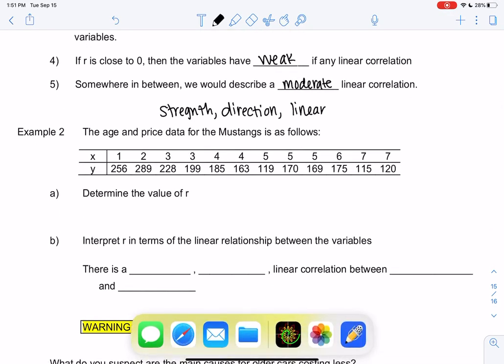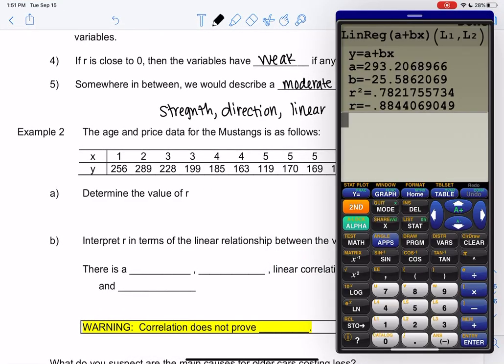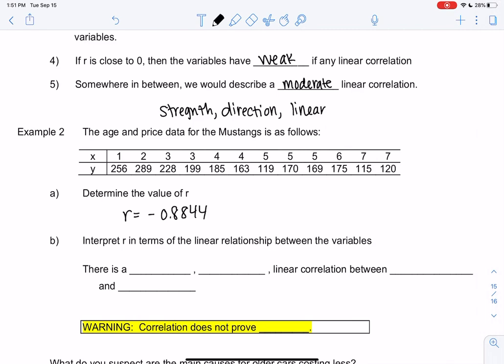So back to the Mustang data. We probably still have the regression out if you're watching these in order. Our R value is negative 0.8844. I'm going to stick with four decimal places. So we did R squared last section, and we'll do R this section. So this tells me what? Would 0.8 be strong? Yeah, I would say it's strong because it's close to 1, close to negative 1 I should say. The negative tells me it's a negative and linear correlation between the two variables. There's a strong, negative, linear correlation between age and price.